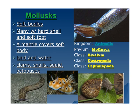The first invertebrate we're going to talk about are the mollusks. These are ones like snails, squid, scallops, or cuttlefish. They have soft bodies. Many of them have a hard shell with a soft foot, especially like scallops, clams, and snails. A mantle covers the soft body. They can live on land and water. Some examples are clams, snails, squid, and octopus.